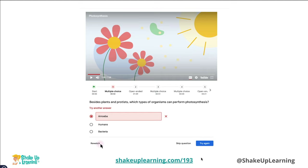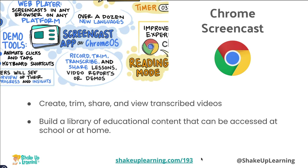Also coming to Google Classroom is the ability to take a YouTube video and make it interactive — adding questions for students to visually introduce and reinforce concepts. Students can go at their own pace, and teachers will get an overview of student progress and insights, so we get data from it too. You'll even be able to see where those stopping points are, and the teacher can see if students are actually watching and answering the questions as they go.